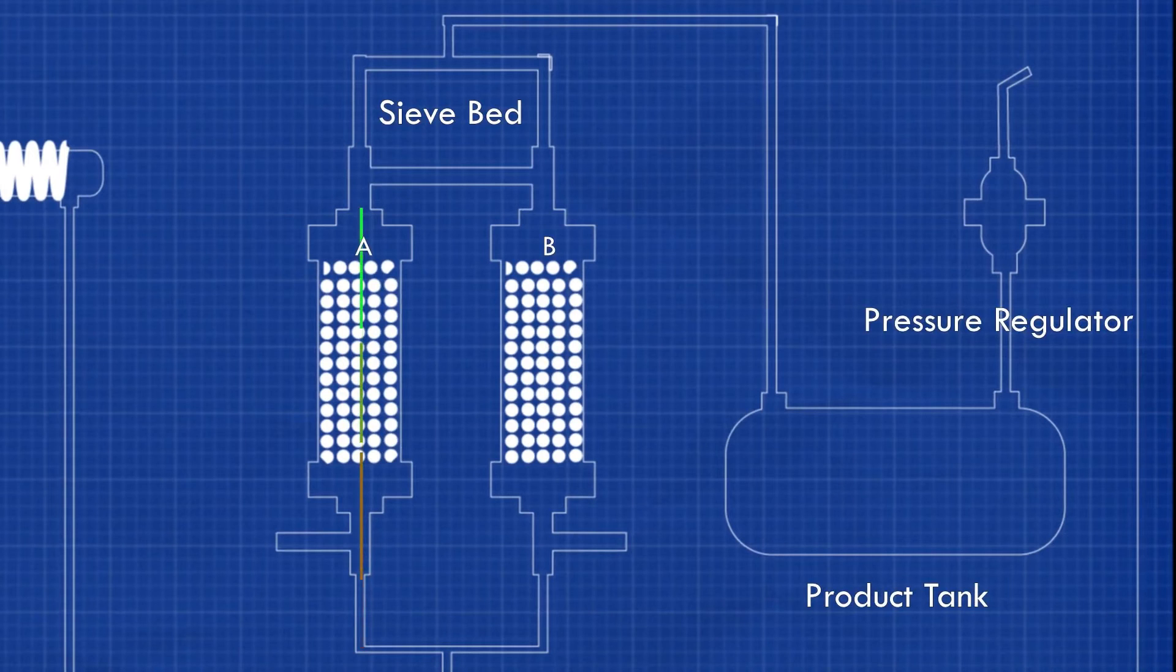At this stage, we have successfully extracted pure oxygen. This oxygen is then sent to the product tank and then to the pressure regulator where the pressure and flow of oxygen can be regulated.